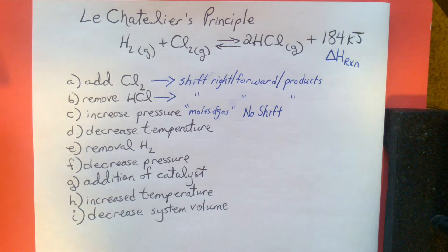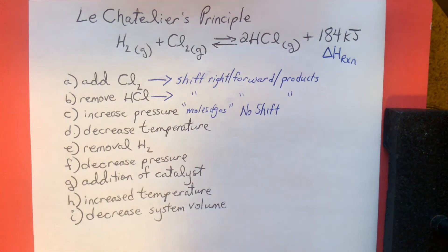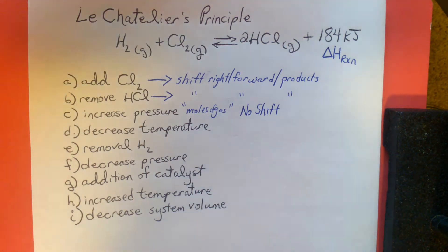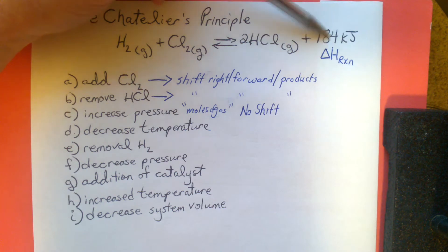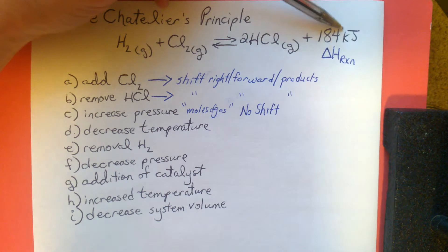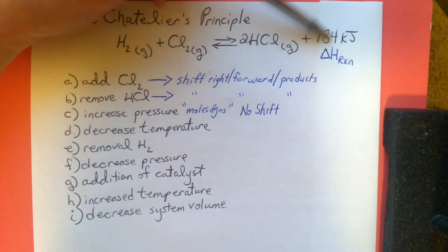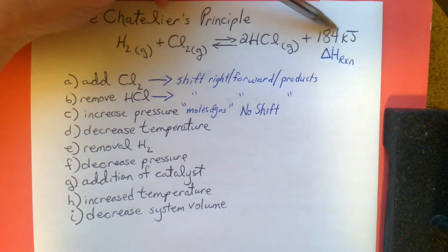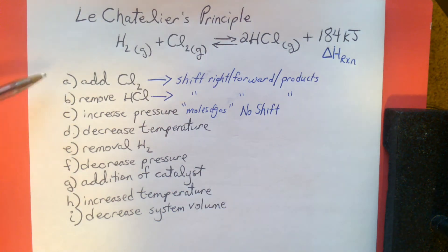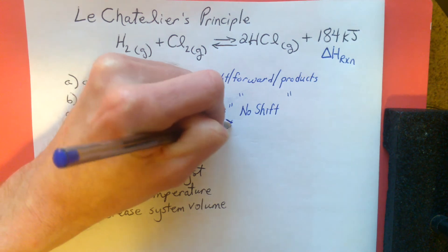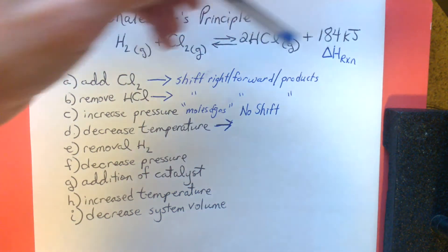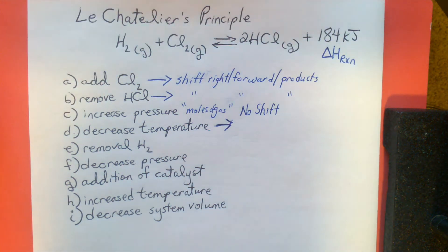Letter D: decrease temperature. Temperature affects the rate of reactions and collision probability. If we decrease the temperature, we remove some of the heat energy — that 184 kilojoules. It's similar to letter B: if you remove, you remain. So if we decrease temperature, we shift to the right, forward to products. Think of it as having to refill that 184 kilojoules — you have to bring that energy back up.